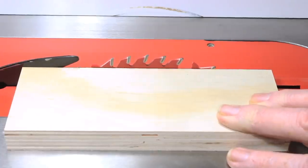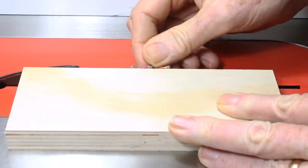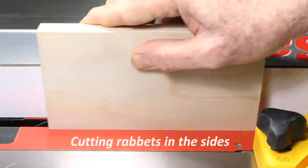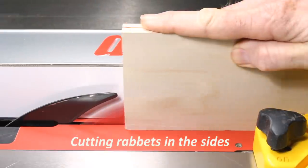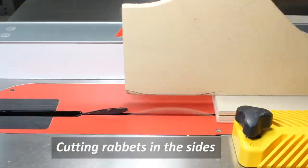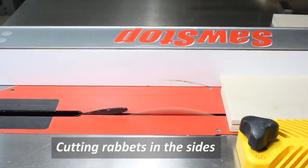Next, cut rabbets in the sides. These create strong joints, but more importantly, they make it much easier to glue the box up and keep it square. The rabbet at the bottom is the thickness of one piece of plywood, while the rabbet at the top is the thickness of two pieces.